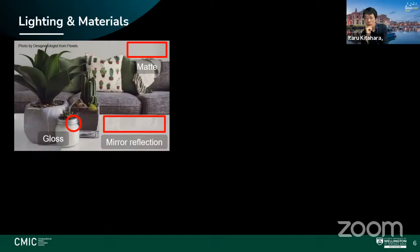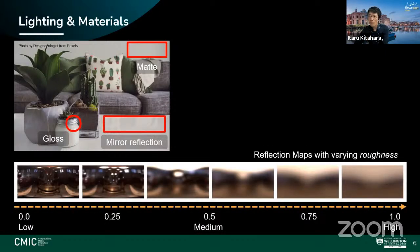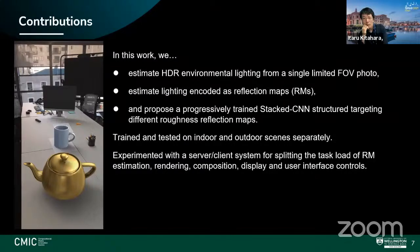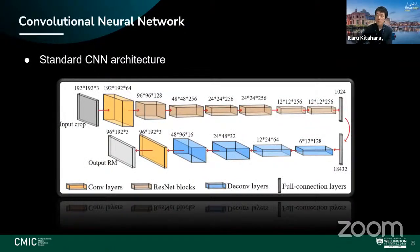Our method is scene-based. Prior work focuses on estimating light sources directly, used in rendering pipelines for different materials — such as matte paint, gloss jar, and mirror-like table reflections. Instead of estimating the light directly, we estimate the light convolved with the material — these are called reflection maps, with varying roughness. Low roughness gives a mirror-like surface; increasing roughness yields glossy materials; highest roughness approaches diffuse. We estimate HDR environmental lighting from a regular limited field-of-view image and propose a progressively trained stacked CNN structure.